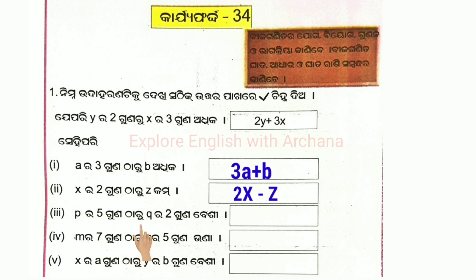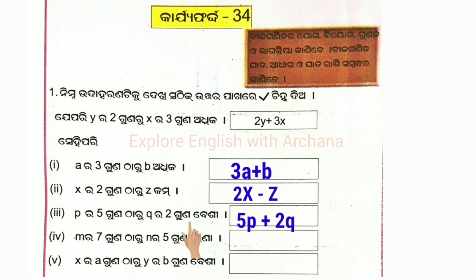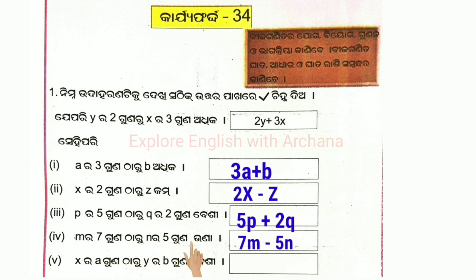For p⁵ × q², p⁵ gives 5p, plus q² gives 2q. For m⁷ × n⁵, minus, minus — let's note: plus b·y.